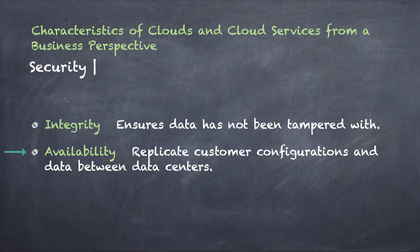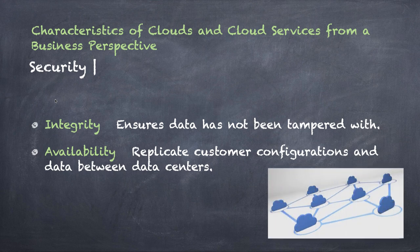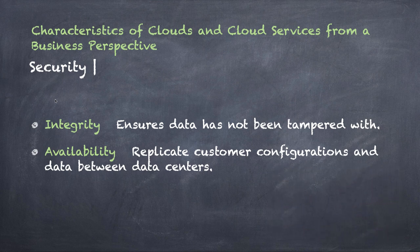Another type of security is availability — is your data in more than one place? Your data shouldn't be in just one place. If the internet goes down there, or there's a denial of service attack, you want your data in at least two places. Is your data replicated? You pay more the more places you replicate. When you purchase cloud, you can choose to have data stored in just one data center — low availability — or you can choose higher availability with your data duplicated to two, three, or more data centers around the world, increasing the likelihood your data is always available.